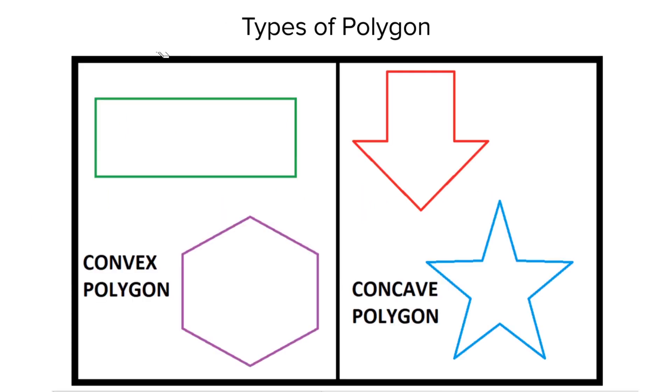Now, let's take a look at different types of polygons. What is the difference between these two types of polygons? This set is convex polygons. Yes, these polygons have no portions of their diagonals in the exterior of the polygon.